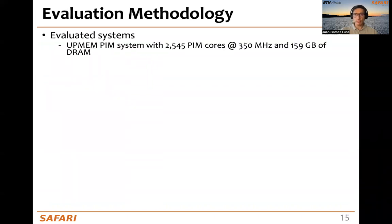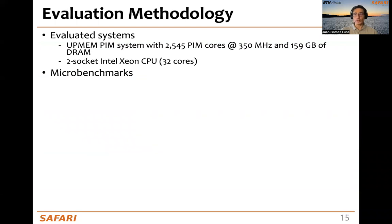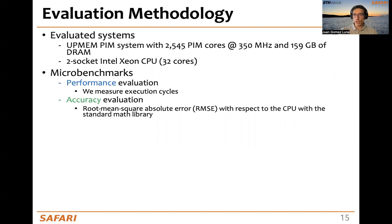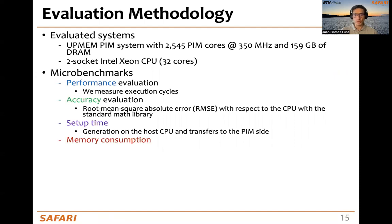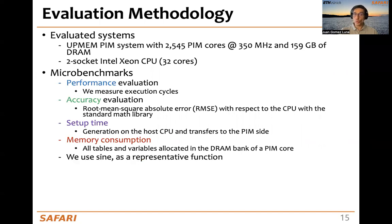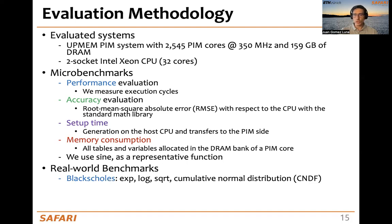We evaluated two systems: a UPMEM-based PIM system with 2,500 PIM cores and a dual-socket Intel Xeon CPU. We evaluate TransPIMLib with microbenchmarks measuring execution cycles for performance, root mean squared absolute error with respect to the CPU standard math library for accuracy, setup time — the time needed to generate lookup tables in the host CPU and transfer them to the PIM side — and memory consumption, which is the total memory occupied by tables and variables in the DRAM bank of a PIM core. We use sine as a representative function, and also evaluate real-world benchmarks: BlackScholes (using exponentiation, logarithm, square root, and cumulative normal distribution), Sigmoid, and SoftMax.